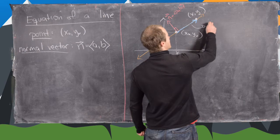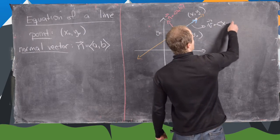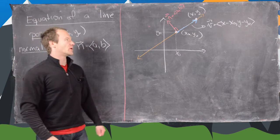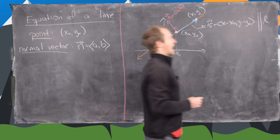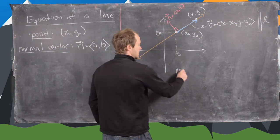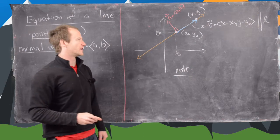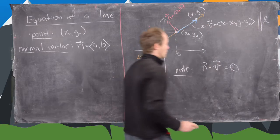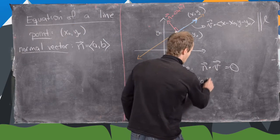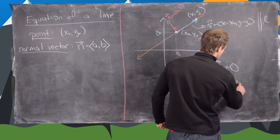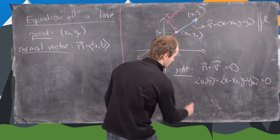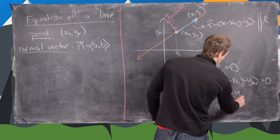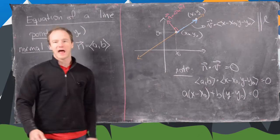This vector — maybe we'll call it v — is given by x minus x-naught and y minus y-naught. Given that it is the difference of two points on the line, we know it is parallel to our line L. We then use the fact that the dot product of any two orthogonal vectors is 0 to take n dot v equals 0. That gives us a, b dot (x minus x-naught, y minus y-naught) equals 0, which is a(x minus x-naught) plus b(y minus y-naught) equals 0. And there we have an equation of a line.